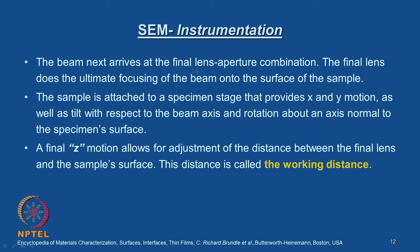The beam next arrives at the final lens and aperture combination. The final lens does the ultimate focusing of the beam onto the surface of the sample. The sample is attached to a specimen stage that provides X and Y motion, as well as tilt with respect to the beam axis and rotation about an axis normal to the specimen surface. A final Z motion — vertical motion — allows adjustment of the distance between the final lens and the sample surface. This distance is called the working distance.